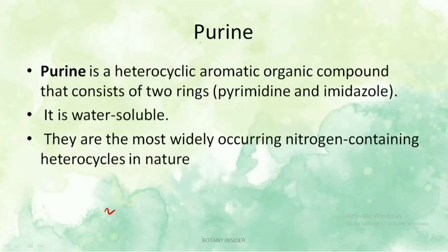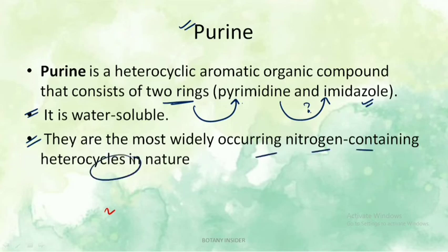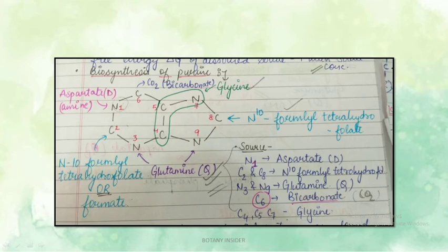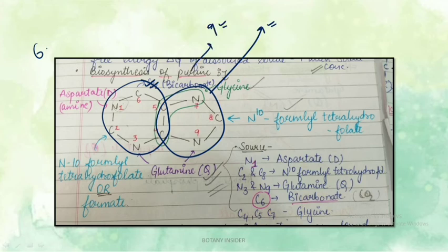Purine is a heterocyclic aromatic organic compound consisting of two rings: a pyrimidine ring and an imidazole ring. It is water soluble and is the most widely occurring nitrogen-containing heterocycle in nature. In case of purine you can see the pyrimidine-shaped six-membered ring, plus the additional imidazole ring — making it a nine-membered structure overall.